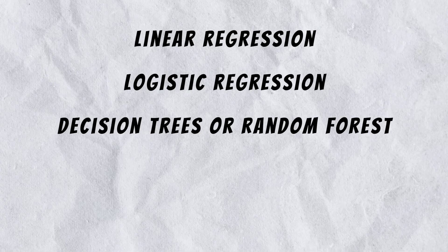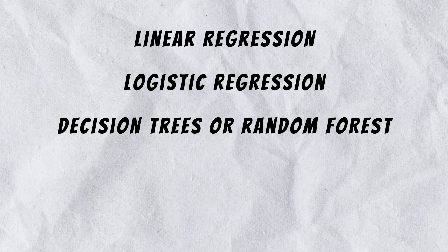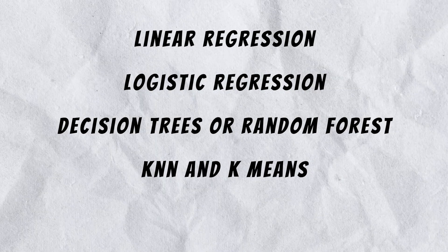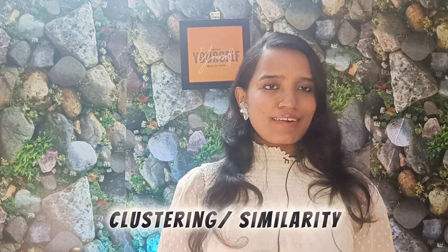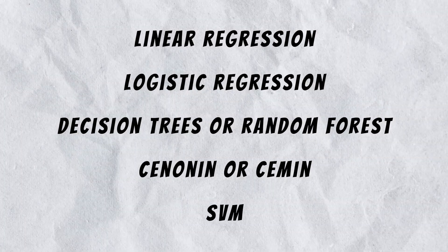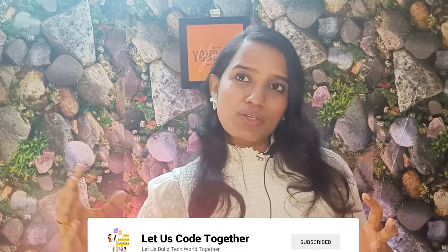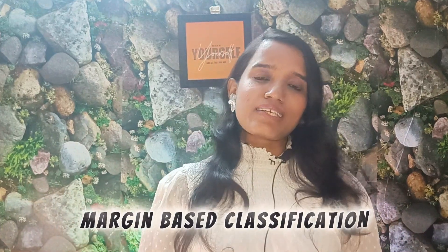Number three, decision trees or random forest, which are about figuring out pattern-based models. Number four, KNN or K-means, where clustering and similarity is what you can calculate. Number five, SVM — support vector machine — where you will learn about margin-based classification.